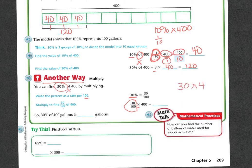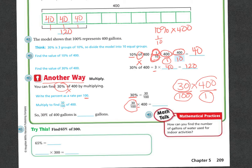So 30 times 400, putting it over 100. We can use cross-multiplying. 100 goes into itself one time, and 100 goes into 400 four times. So that means I'm doing 30 times 4, which is 120 over 1, which is 120. So 30% of 400 gallons is 120 gallons.